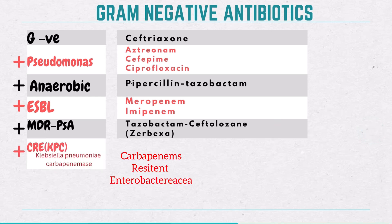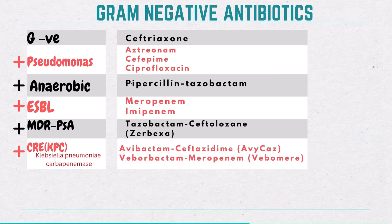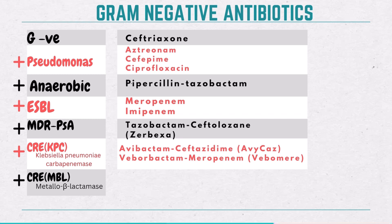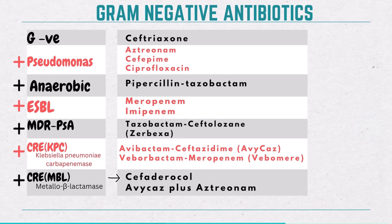Next, CRE — carbapenem-resistant Enterobacteriaceae — is divided into two subtypes: KPC-producing bacteria (Klebsiella pneumoniae carbapenemase) and MBL-producing bacteria (metallo-beta-lactamases). For KPC-producing bacteria, the treatment options are Avycaz (avibactam plus ceftazidime) — a third-generation cephalosporin with no anaerobic coverage — or Vabomere (vaborbactam plus meropenem), which unlike Avycaz doesn't cover MDR-pseudomonas. For MBL-producing bacteria, which are resistant to almost everything else, treatment options include cefiderocol, a siderophore cephalosporin, or a combination of Avycaz plus aztreonam. Remember, neither of these covers anaerobes.